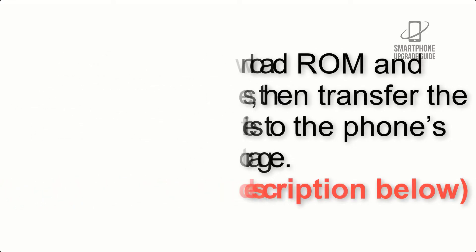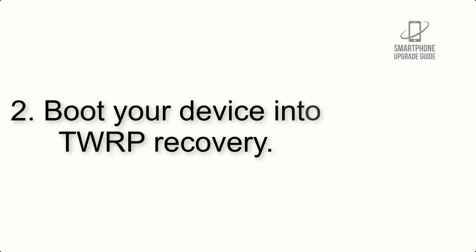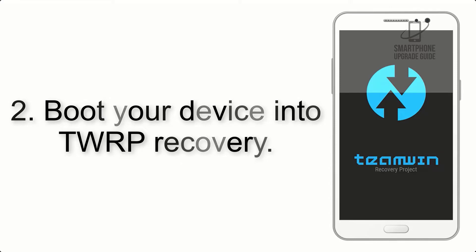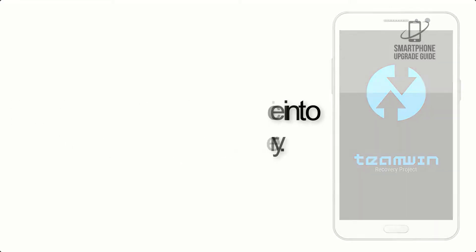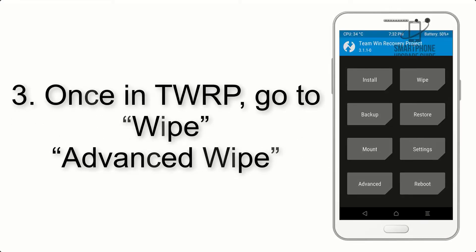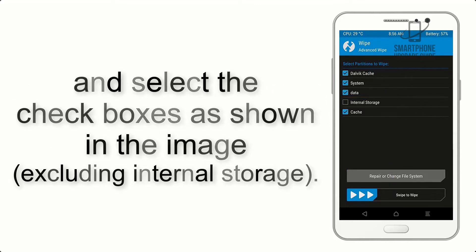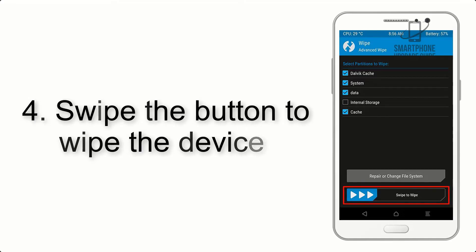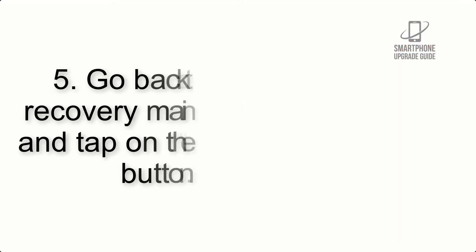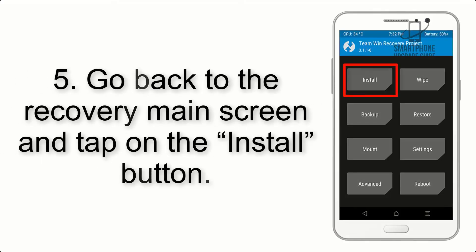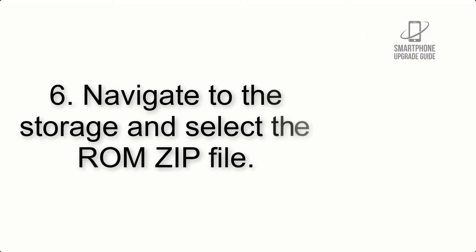Step 2: Boot your device into TWRP recovery. Once in TWRP, click on Advanced Wipe and select the checkboxes as shown in the image, excluding internal storage. Step 4: Swipe the button to wipe the device. Step 5: Go back to the recovery main screen and tap on the Install button.